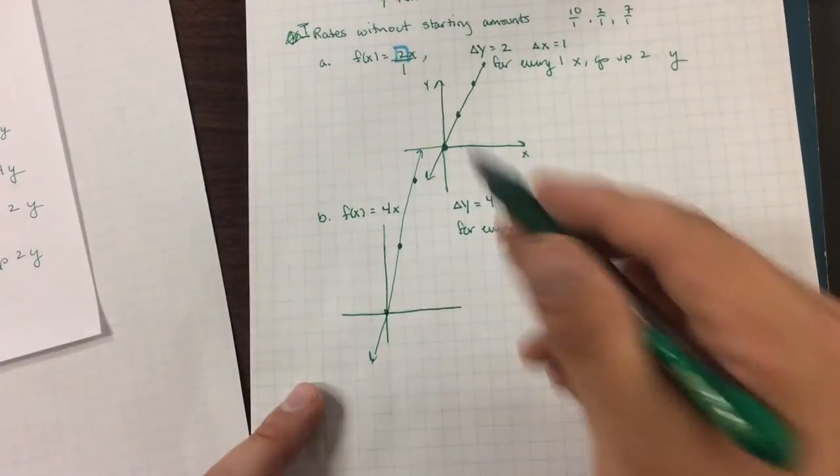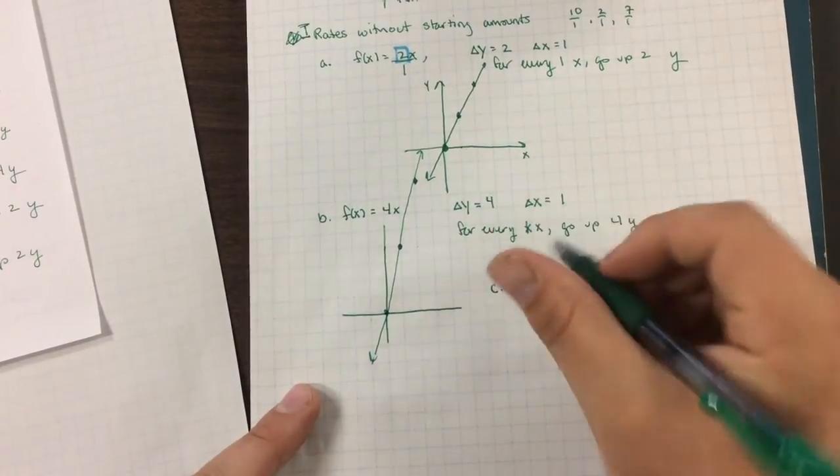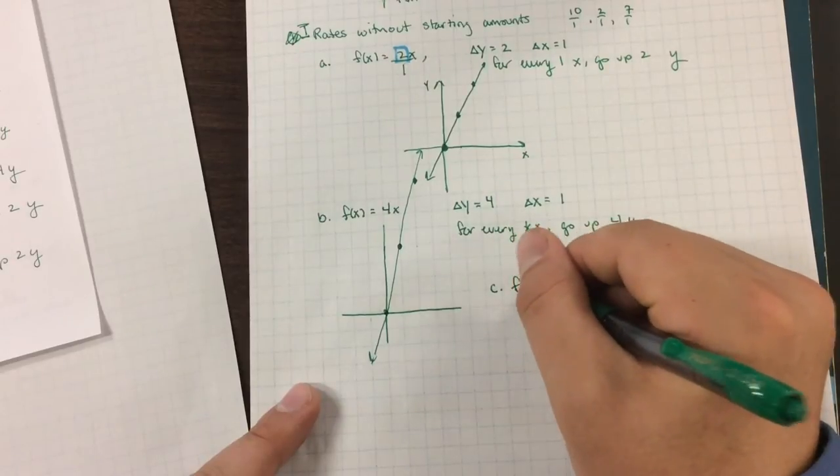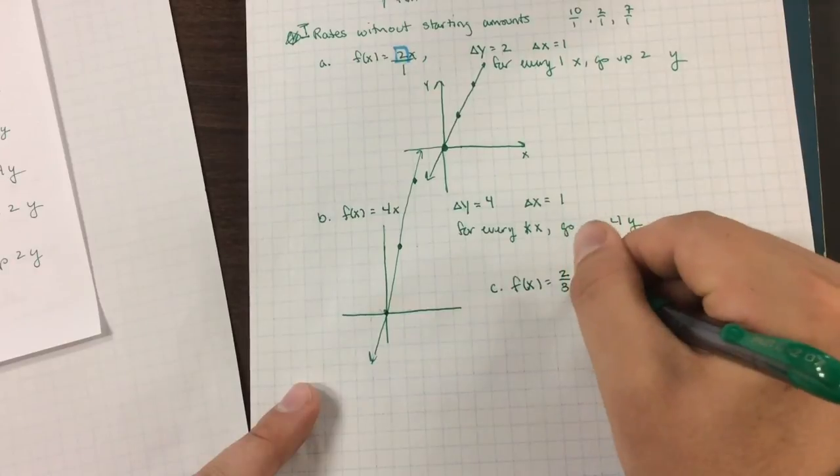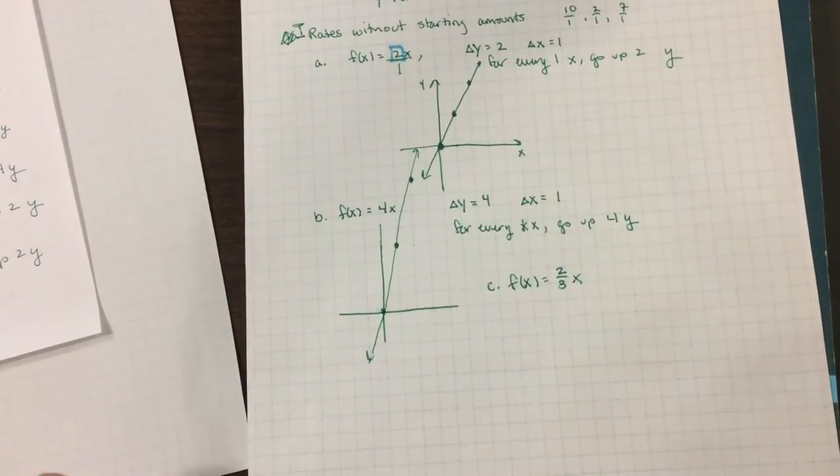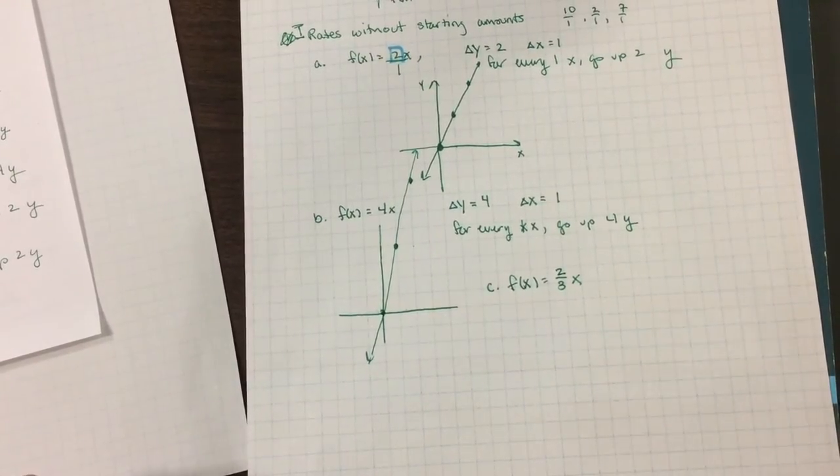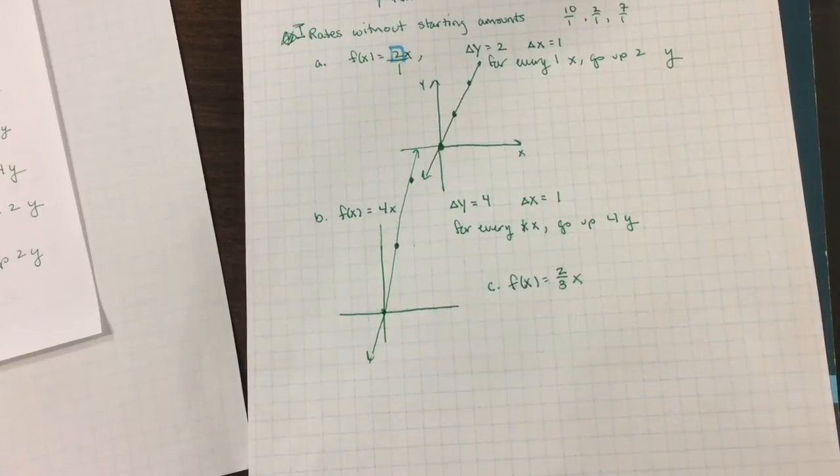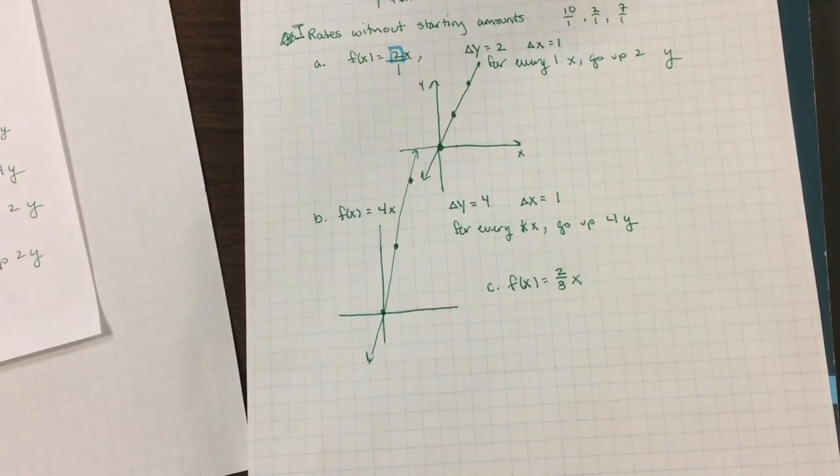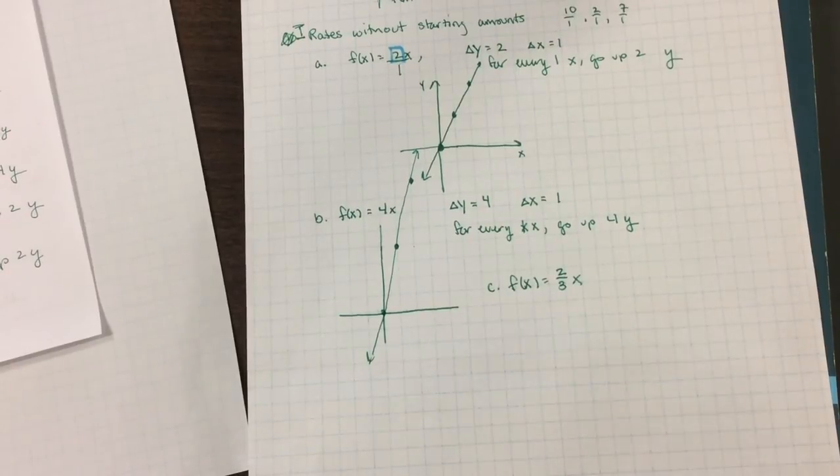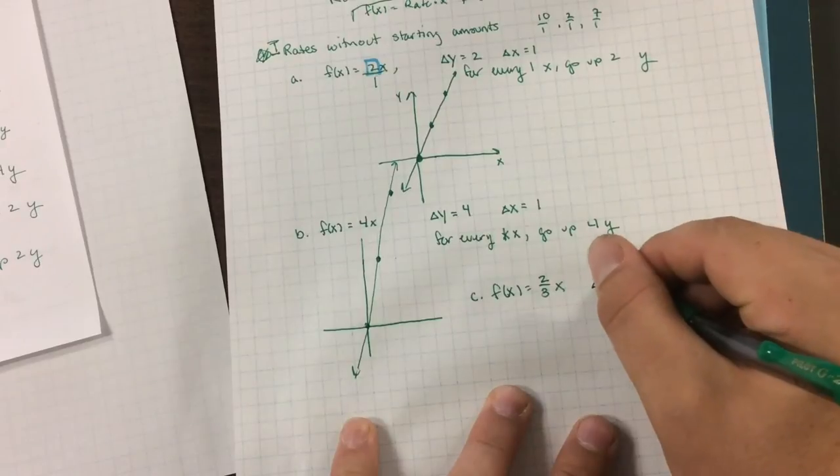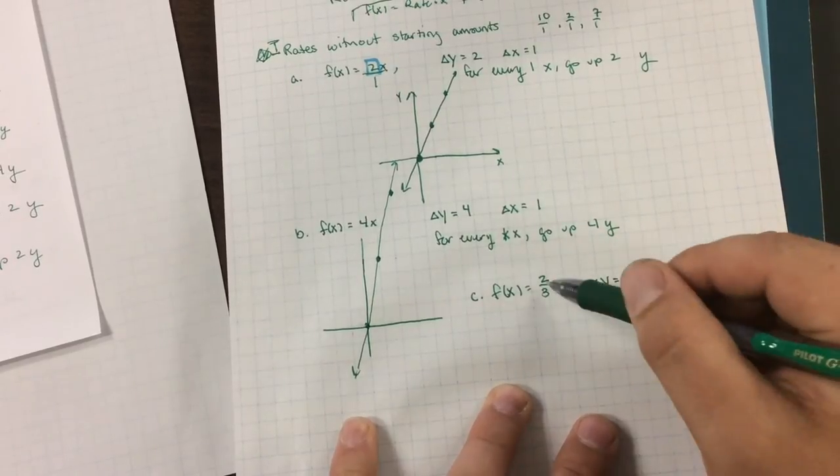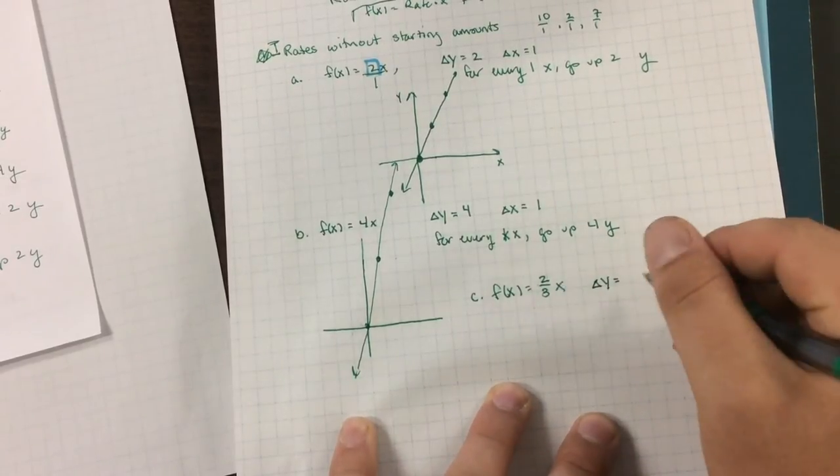Okay, let's try another one. I'm going to pop in c over here. So let's say f of x equals 2 thirds x. Now, don't be scared of fractions here. We're not doing a lot of math with these right now. We're just graphing them. So if we can understand how to graph fractions, we're in a good spot. So the rate here, let's see.